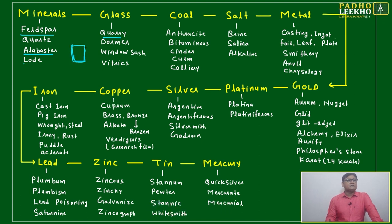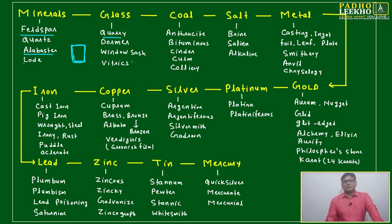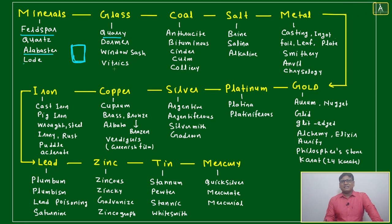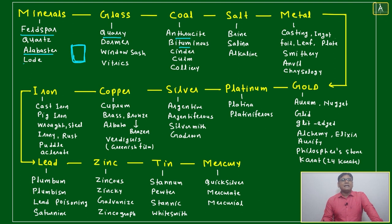Window sash — this is the supporting frame on all sides of a window that holds the glass. That is called a window sash, and most of the time it will be made of plastic or rubber. Also note the word 'vitrix,' which is related to glass.